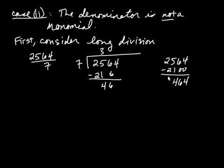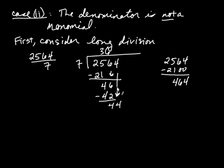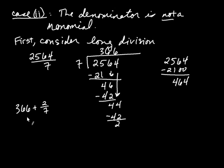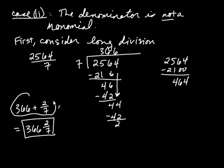We're going to be doing this soon with polynomials, so keep this in mind. 7 goes into 46 six times; multiply 6 by 7 to get 42, subtract it — really subtracting 420 from 464 — leaving 44. Then 7 goes into 44 six times, giving 42, with a remainder of 2. Your answer is 366 and 2 sevenths. This is typically how you write your answer, and this is really how we're going to be writing things with polynomials.